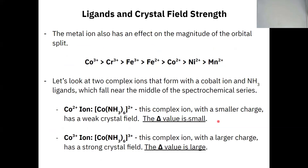Here's another example with two complex ions that look very similar. The only difference between them is the charge on the ion itself — one was formed with Co²⁺ and the other with Co³⁺. You need to be able to determine which has a larger delta value. As we said, the Co³⁺ ion is going to have the larger crystal field splitting energy, and Co²⁺ is going to have the smaller crystal field splitting energy.